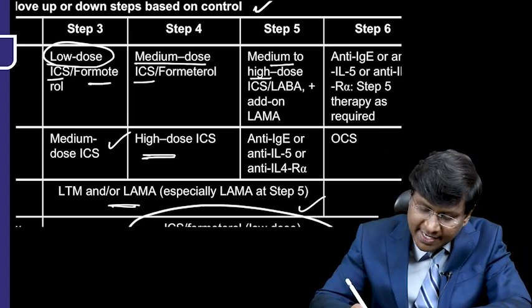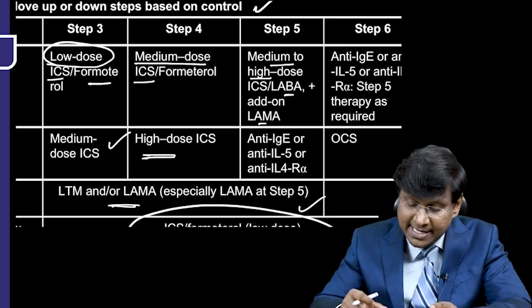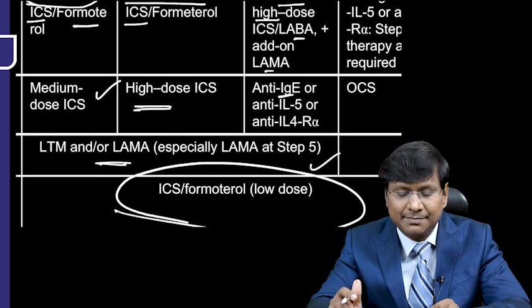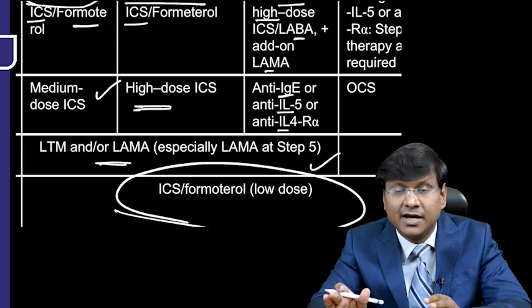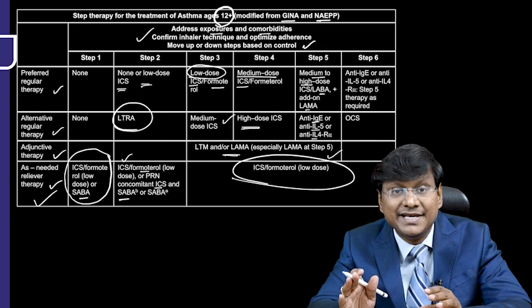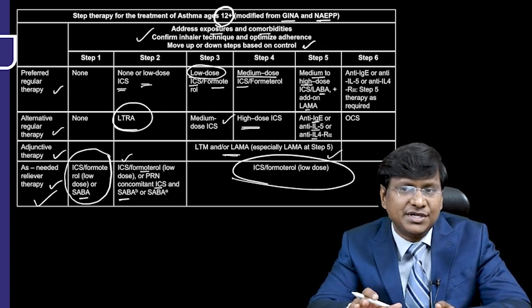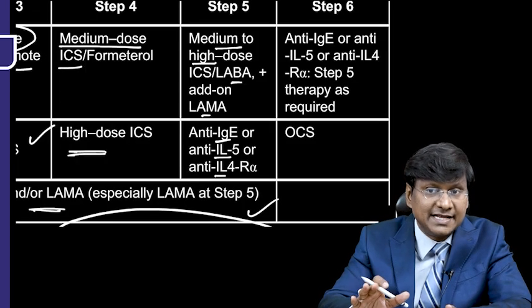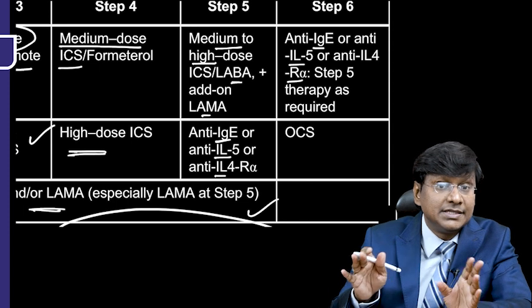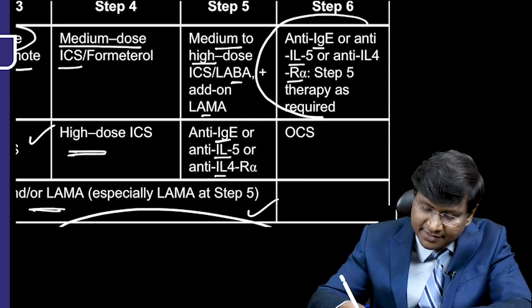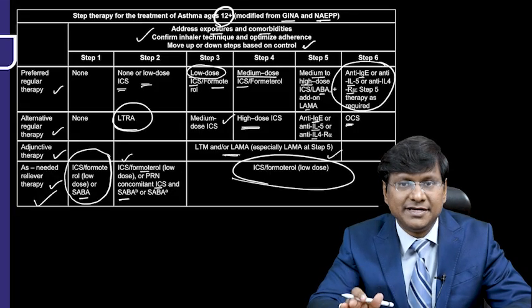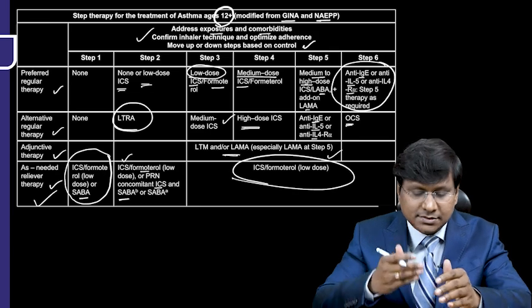In Step 5, alternative therapies include new biologics: omalizumab (anti-IgE), mepolizumab (anti-interleukin-5), and anti-interleukin-4R alpha. Adjunctive therapy is similar to Steps 3 and 4. In Step 6, inhaled corticosteroids are no longer working; the preferred regular therapy is anti-IgE, anti-interleukin-5, or anti-interleukin-4R alpha, while the alternative regular therapy is oral corticosteroids.